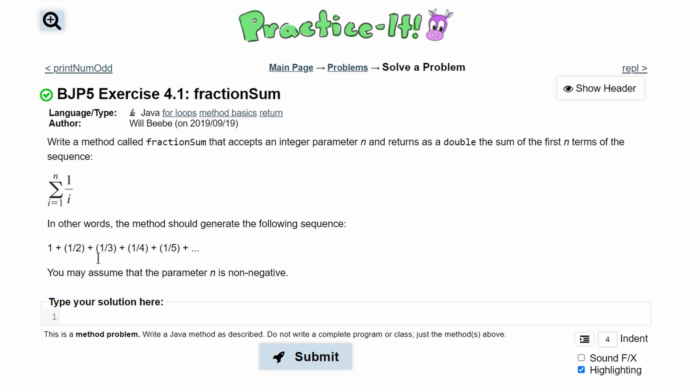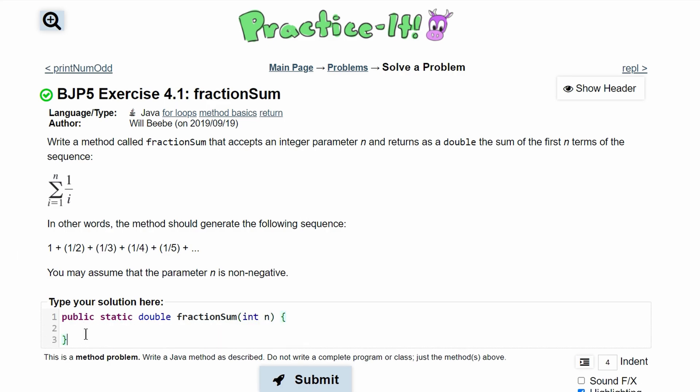We start our method with public static. We know it's returning a double, so we have double, and then the name which is fractionSum. After this, we need our parameter, which is an integer. So we have int n, and then we have our brackets like this.